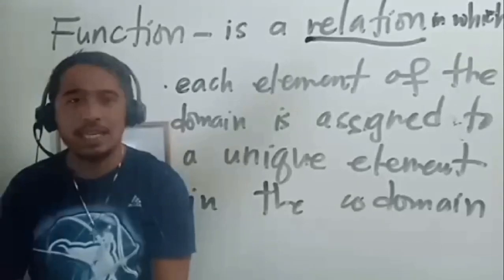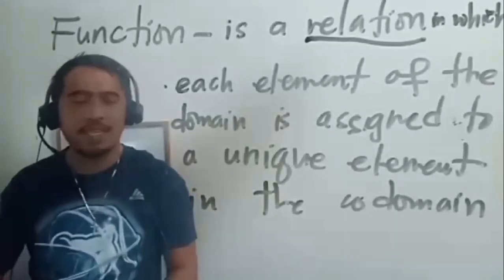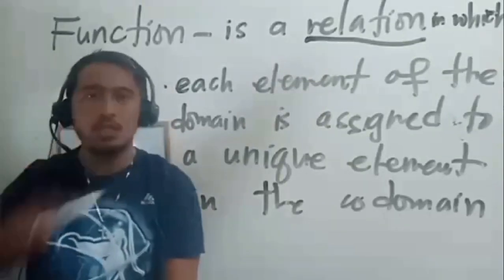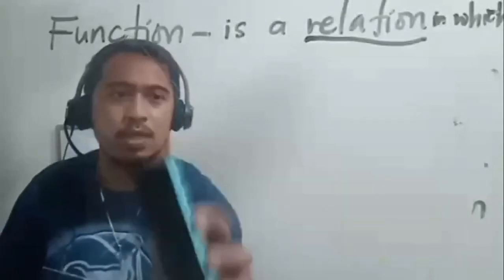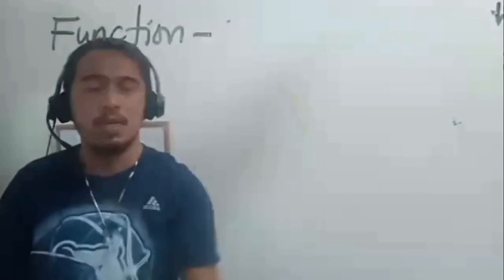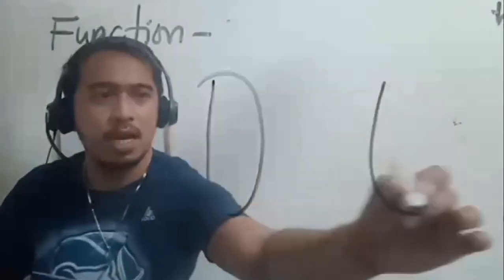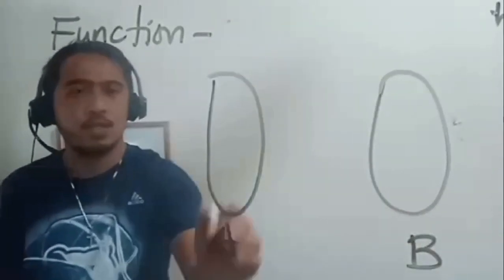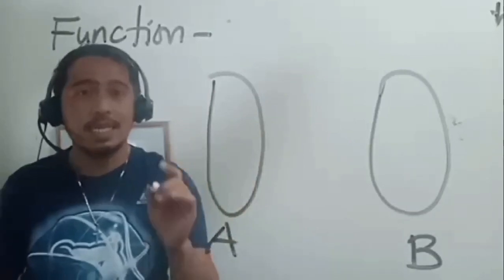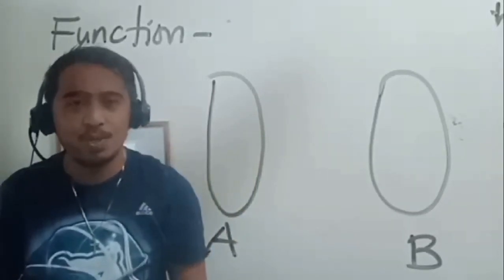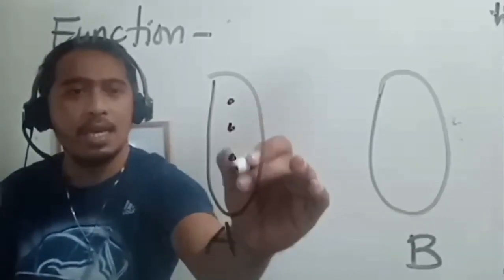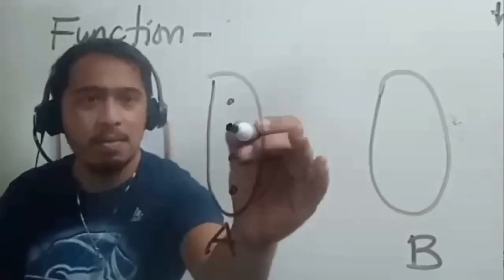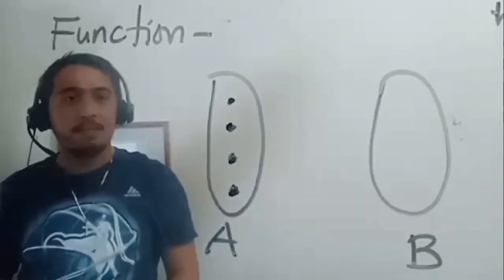A function is a relation in which each element of the domain is assigned to a unique element in the codomain. To understand this thoroughly, two conditions must be satisfied. First, it must be a relation — you assign elements from your domain to your codomain. The first condition is that each element of the domain must be used; all elements of the domain must be assigned.